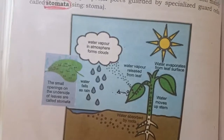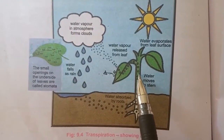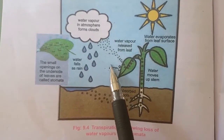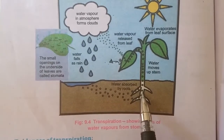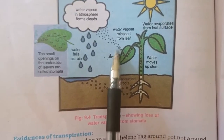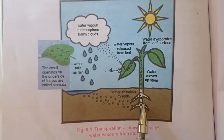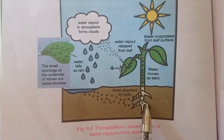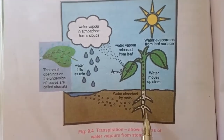اب transpiration کیوں ہو رہی ہے؟ آپ ریکال کیجئے — ہم نے last session میں پڑھا تھا کہ water is continuously absorbed from the root. Root سے water stem میں enter ہوتا ہے اور stem کے بعد leaves میں جاتا ہے۔ اگر leaves سے water remove نہ ہو تو مزید پانی root سے enter نہیں ہوگا — یہ plant کے لیے harmful ہے کیونکہ plant کو continuous supply of minerals چاہیے۔